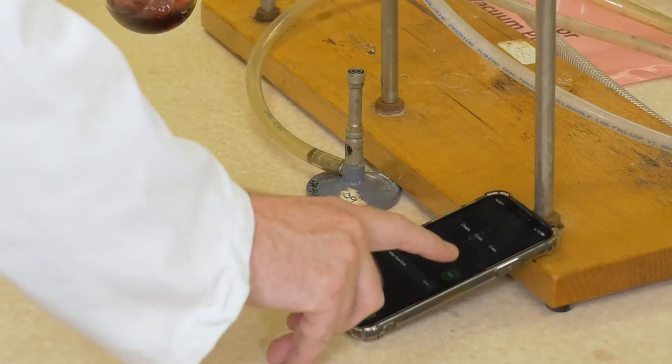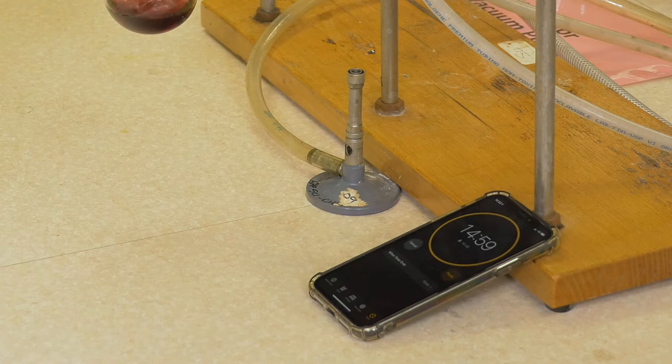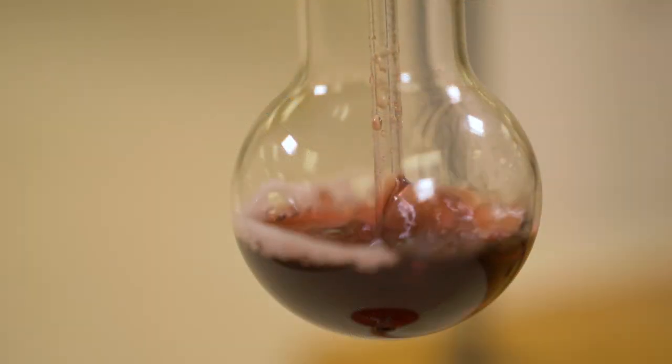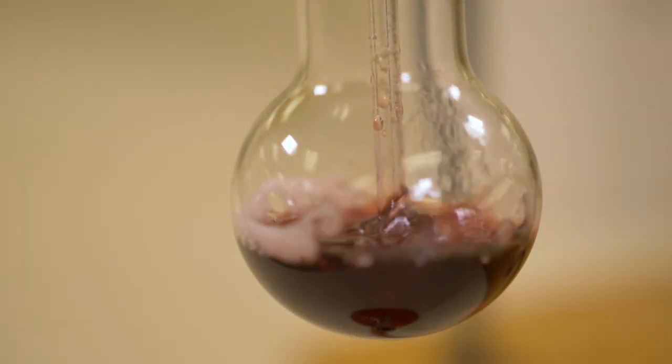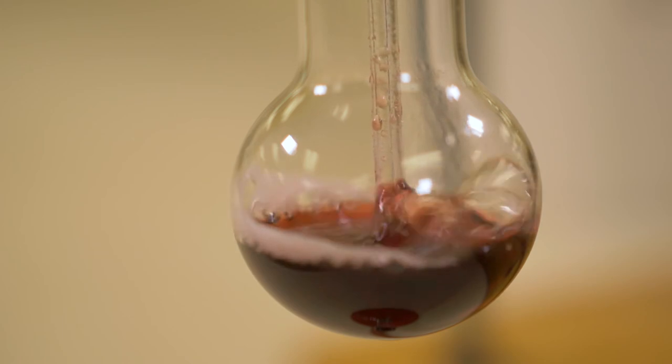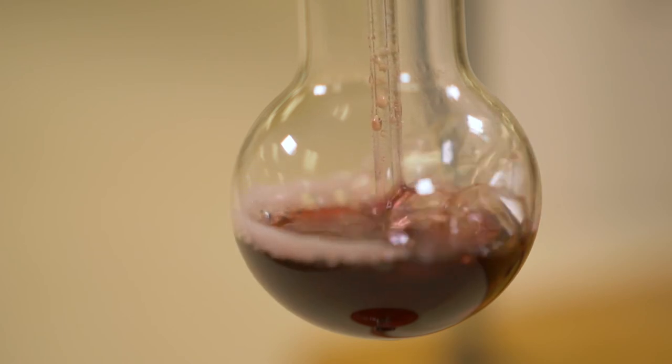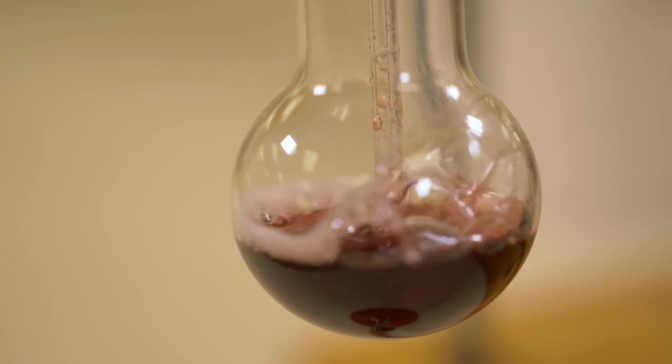The air is allowed to pass through the solution for 15 minutes to ensure that all the free sulfur dioxide has been removed from the sample to the hydrogen peroxide. Take note of the bubbling rate in the sample, it should look similar to this.